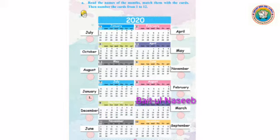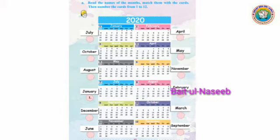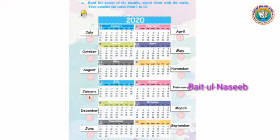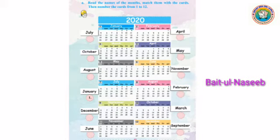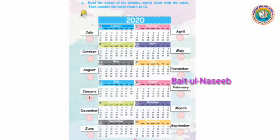एक साल में कितने महीने होते हैं बेटा? एक साल में कुल 12 महीने होते हैं, जिसमें कौन से होते हैं मैं बताती हूँ — जनवरी,